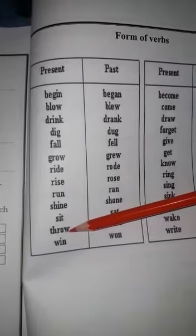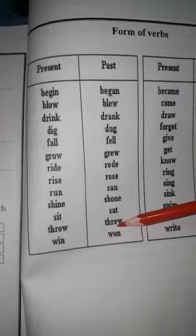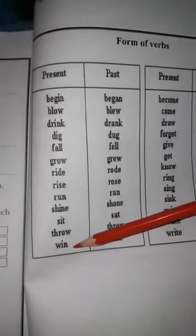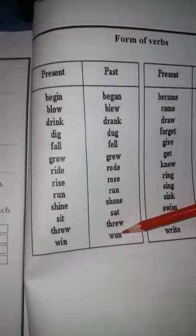Next hai T-H-R-O-W, throw. Throw ki second form kya hai: T-H-R-E-W, threw. Next word hai W-I-N, win. Win ki second form kya hai: W-O-N, won.